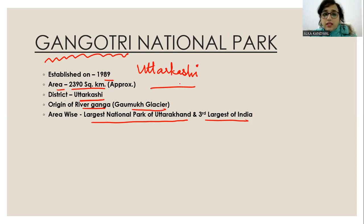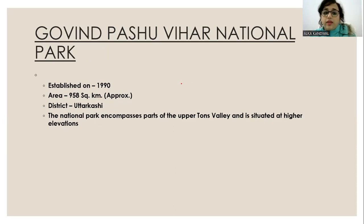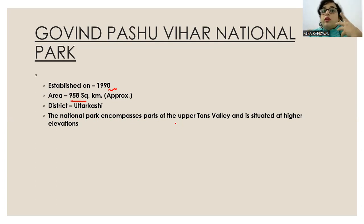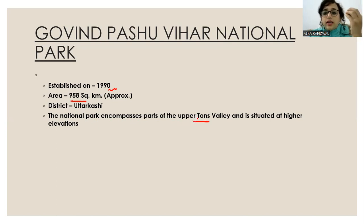To compare: Valley of Flowers is the smallest national park at approximately 87 square kilometers, while Gangotri is the largest at 2390 square kilometers. Govind Pashu Vihar National Park was established in 1990 with an area of 958 square kilometers, located in Uttarkashi district. The national park encompasses parts of the upper Tons River valley and is situated at higher elevation — it is related to the Tons River, which has been asked in exams.